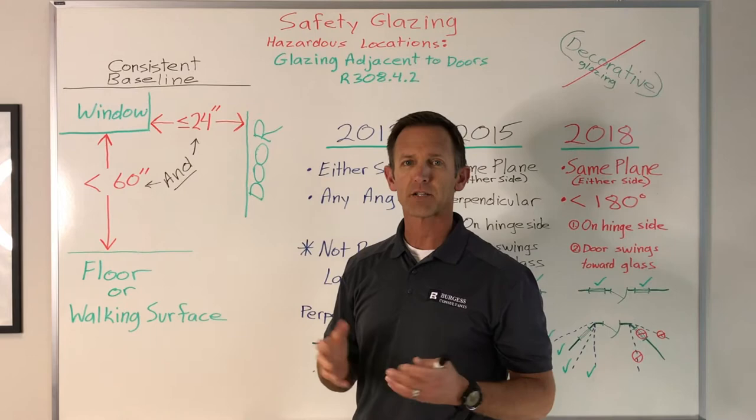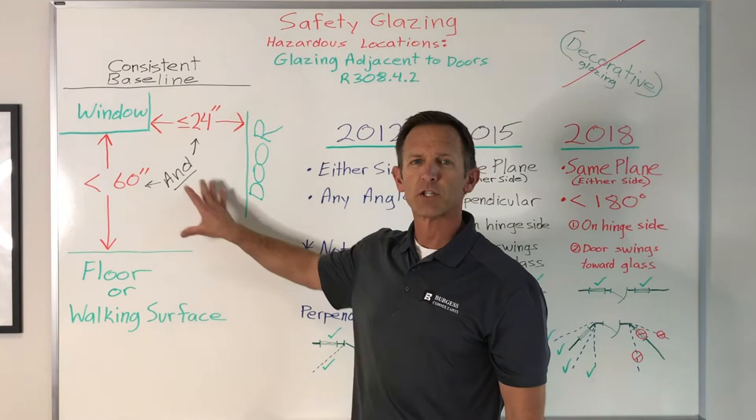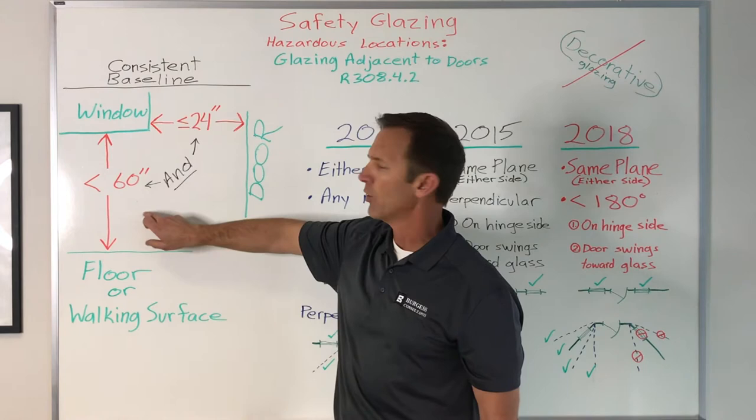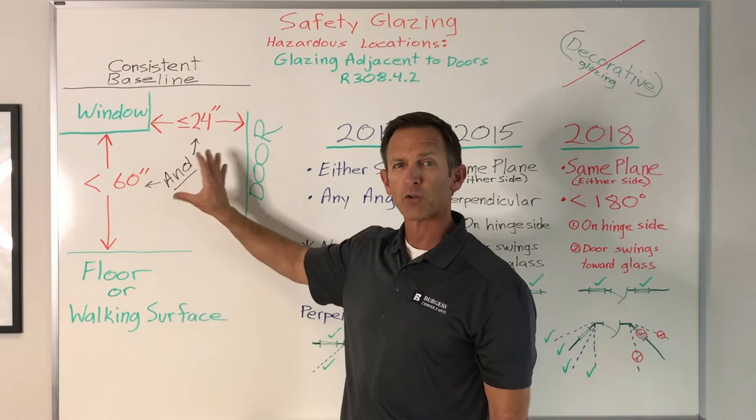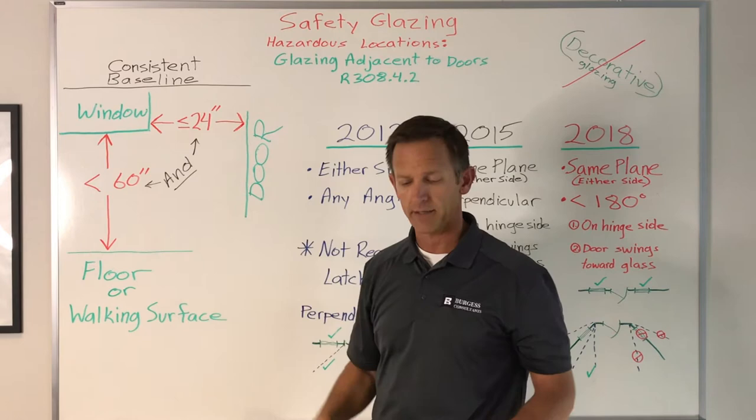We want to start with a baseline because that helps us determine what needs to happen with the glass — whether we need safety glazing or not. Starting on the left side, we determine the proximity to a door. When a window is less than 60 inches from the floor or walking surface, and within 24 inches of a door — both conditions must be met — that's our baseline, consistent across code versions.